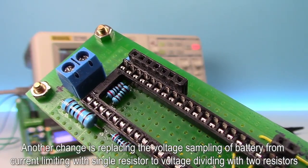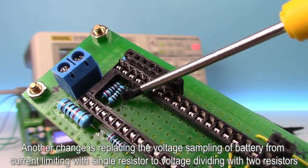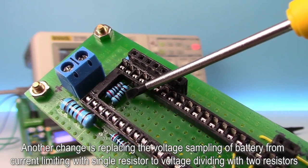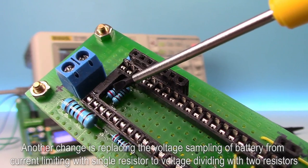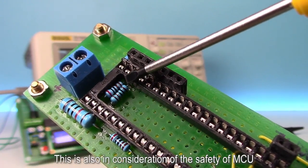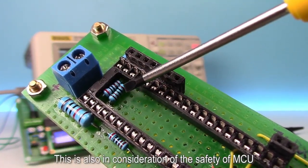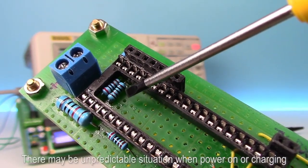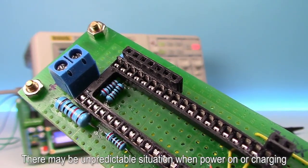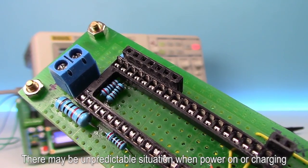Another change is replacing the voltage sampling of battery from current limiting with single resistor to voltage dividing with two resistors. This is also in consideration of the safety of MCU. Since the battery connected to the power module, there may be unpredictable situation when power on or charging.